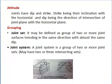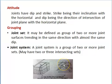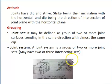Joints generally occur in a group of two or more joint planes. A joint set may be defined as a group of two or more joint surfaces trending in the same direction with almost the same depth. In this diagram, A, B, and C are joint sets, each consisting of two or more joint surfaces. The joint system is a group of two or more joint sets — here A and C form one joint system, and B, D, E trending in the same direction form another joint system.